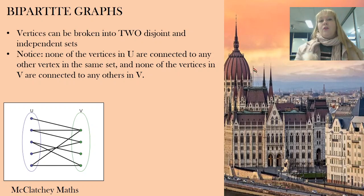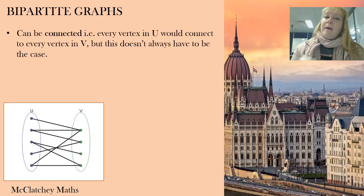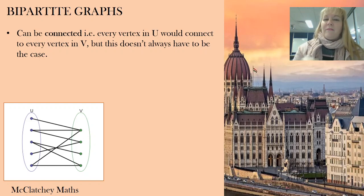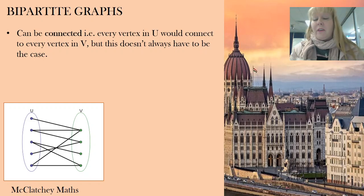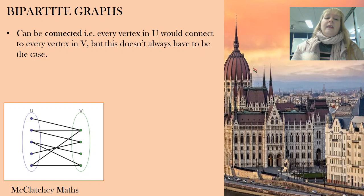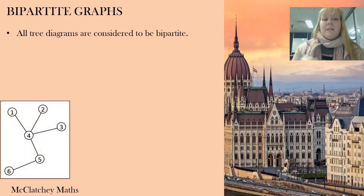There's only that criss-cross across the two sets. Another feature of bipartite graphs: they can be connected graphs where every vertex in U connects to every vertex in V, but that doesn't always have to be the case. A true definition of a connected graph is that every vertex would be connected to every other vertex, so a bipartite graph that's fully connected would be like a semi-connected graph.